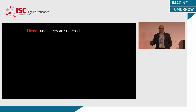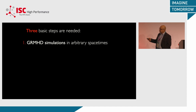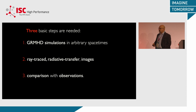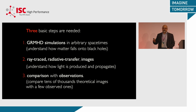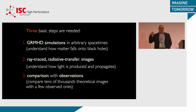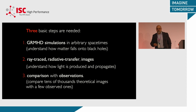There are three basic steps to understand what's going on. The first is general relativistic magneto-hydrodynamic simulations in arbitrary spacetimes. The second is ray-traced radiative transfer images. The third is comparison with observations. More concretely, the first step is understanding what happens to matter as it gets close to a black hole and accretes — how it changes properties, becoming hot and radiating. The second step is understanding how light behaves near a black hole, which is very different from what we experience here. The third step is exploring a large parameter space to find the right match.